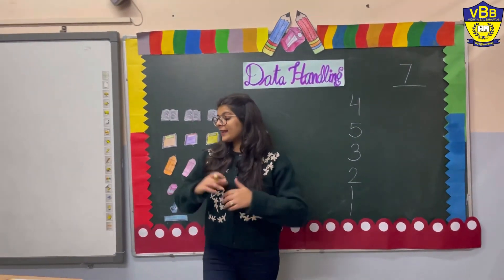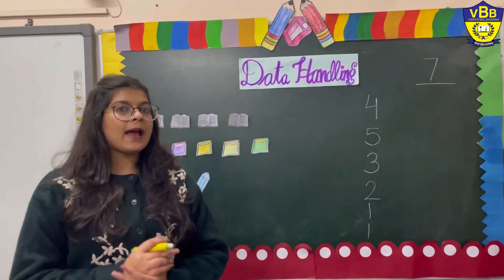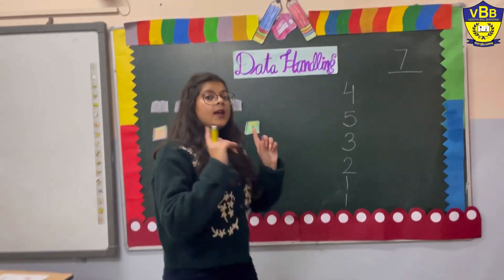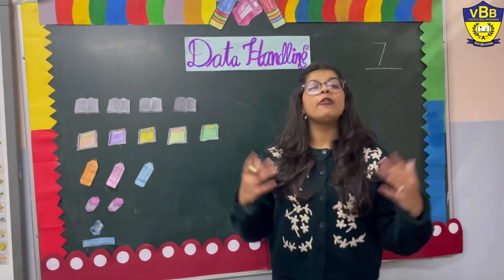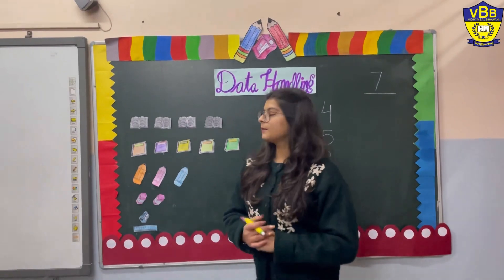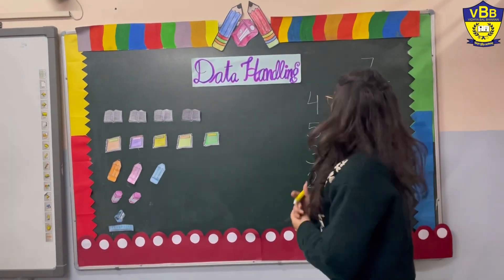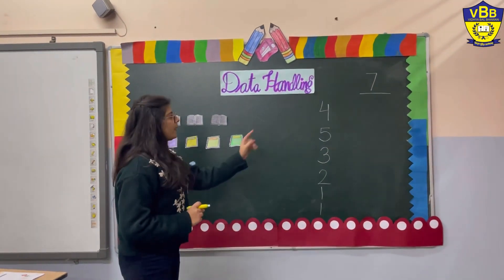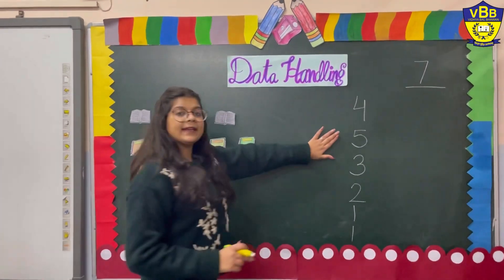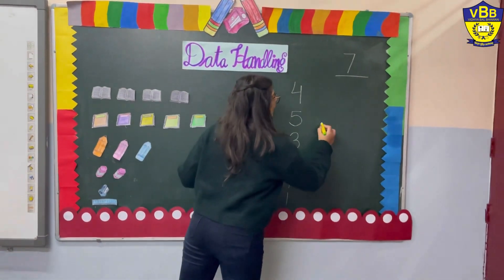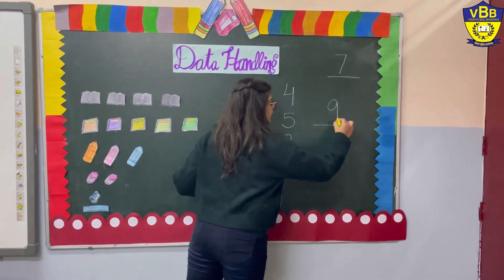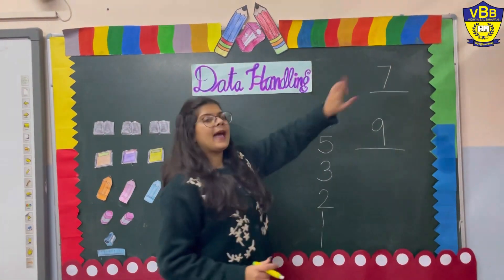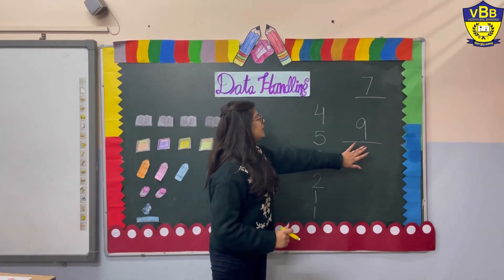Next question: write the total number of books and notebooks. Let us count: 4 plus 5. Count on your fingers — 4 plus 5 is 9. In the second blank, you will write 9. So your first answer is 7 and your second answer is 9.